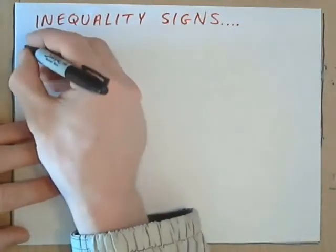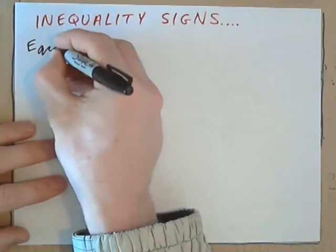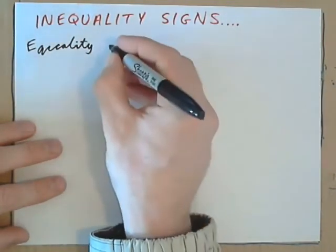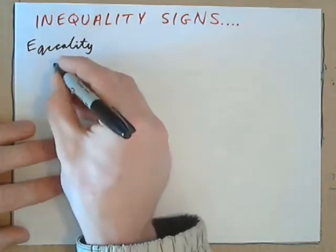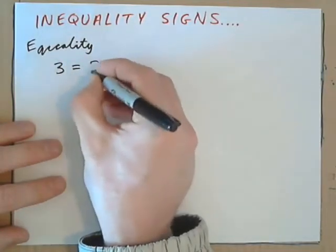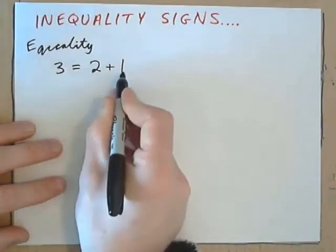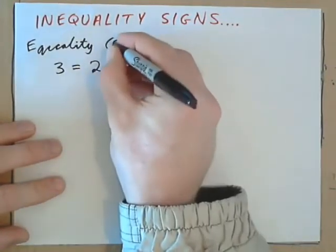Let's have a look at inequality signs. First of all, we'll look at what an equality sign is. Equality is when you have, say, 3 is equal to 2 plus 1. This quantity is the same as this quantity. This is also called an equation.